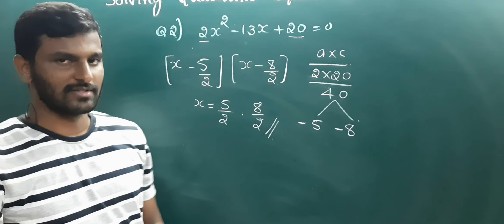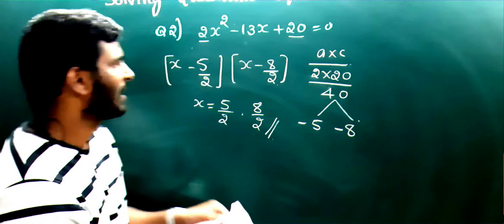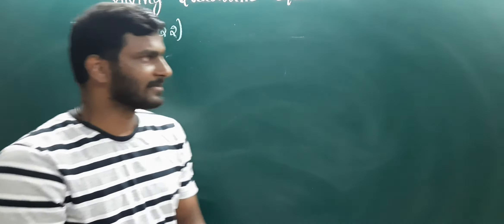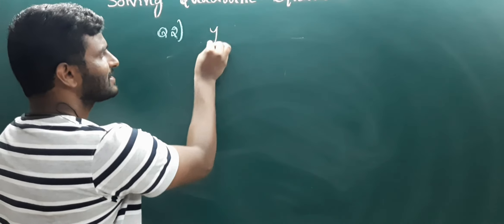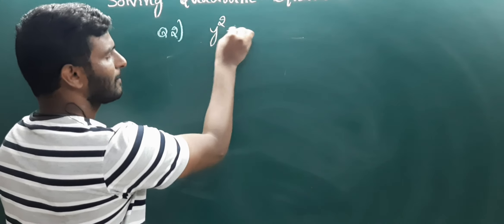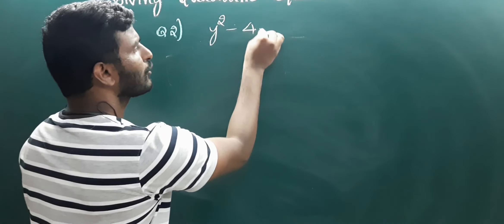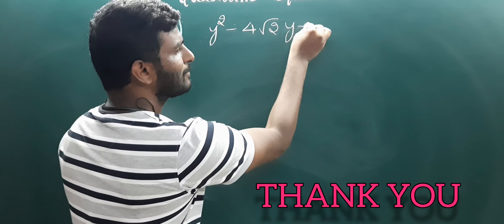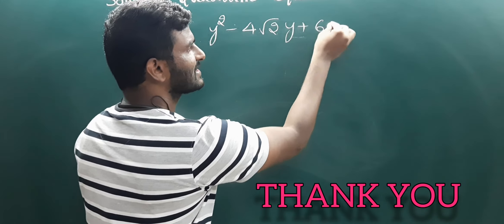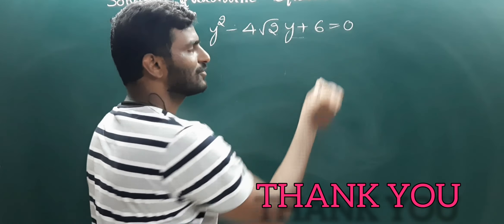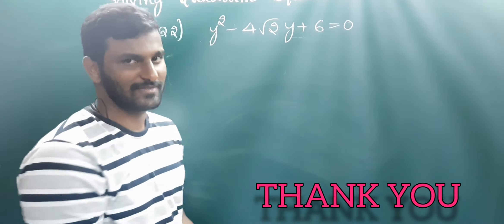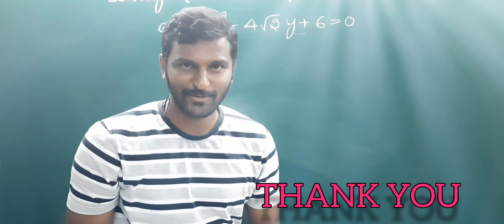So those are the two questions. We will move on to the next question — it is a practice question for you. Just try it and send in your answer. There is a y squared minus 4 root 2 times y plus 6 equals 0. Just try this question. Thank you.